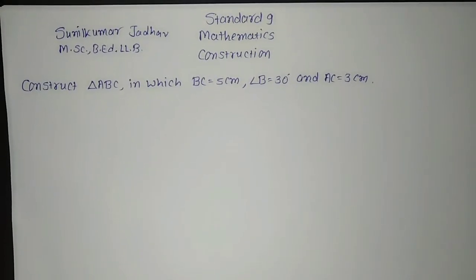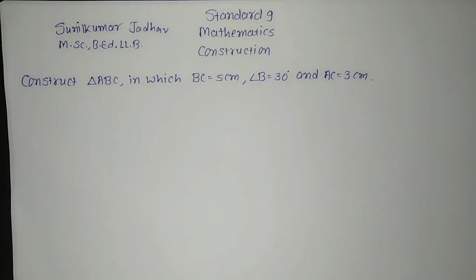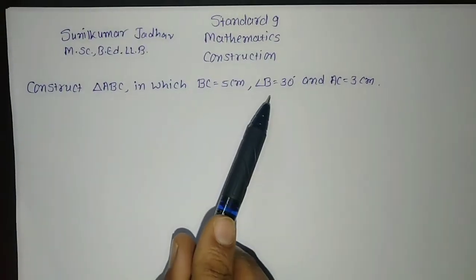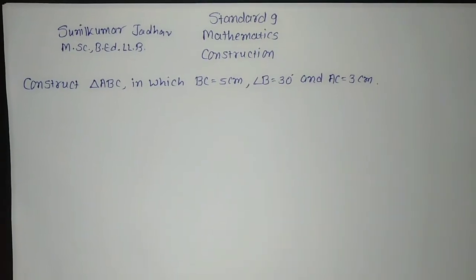I have taken AC equal to 3 centimeter. Construct triangle ABC in which BC is equal to 5 centimeter, angle B is equal to 30°, and AC is equal to 3 centimeter.